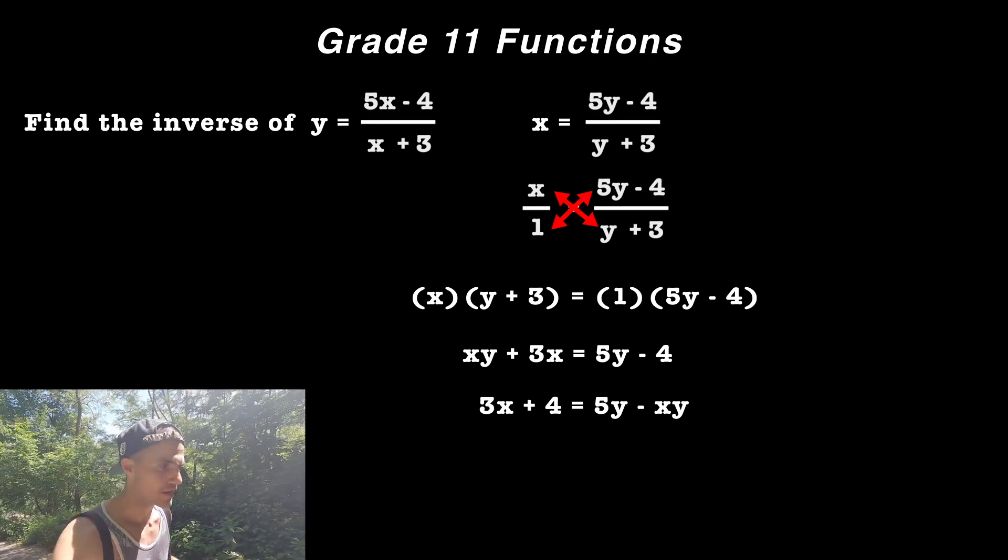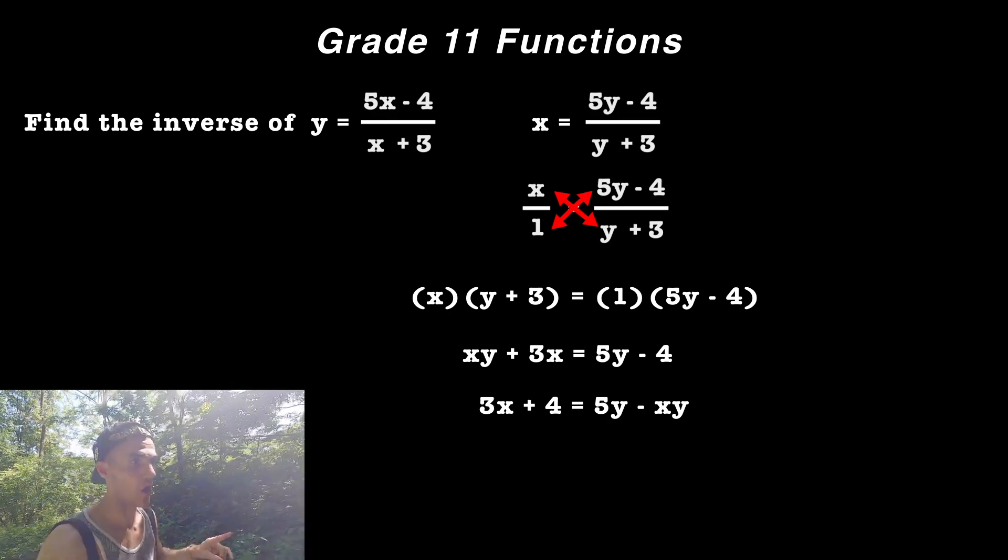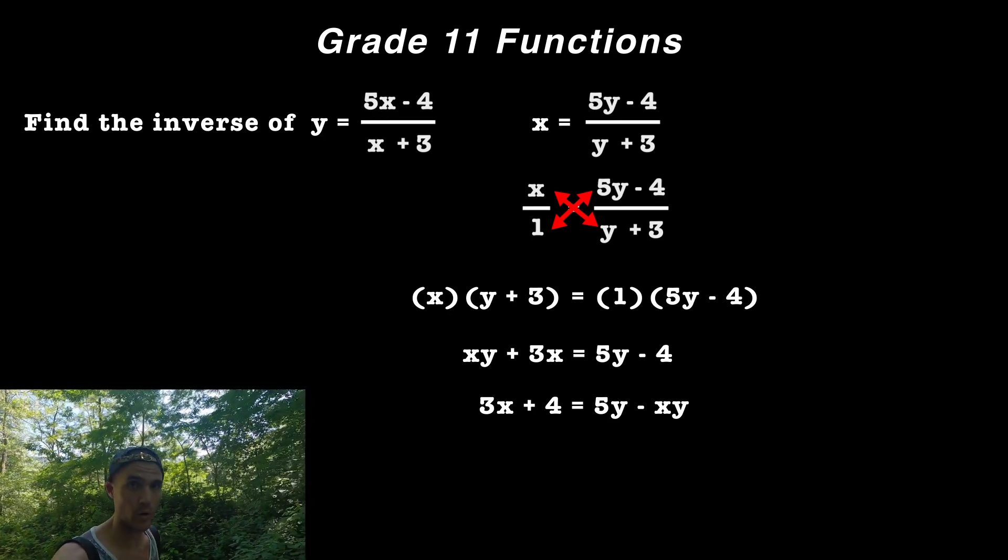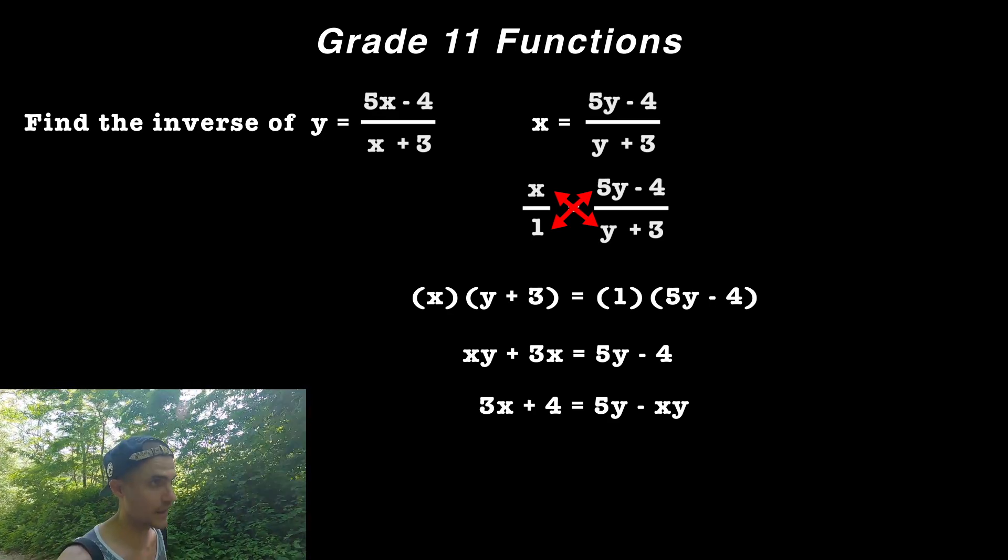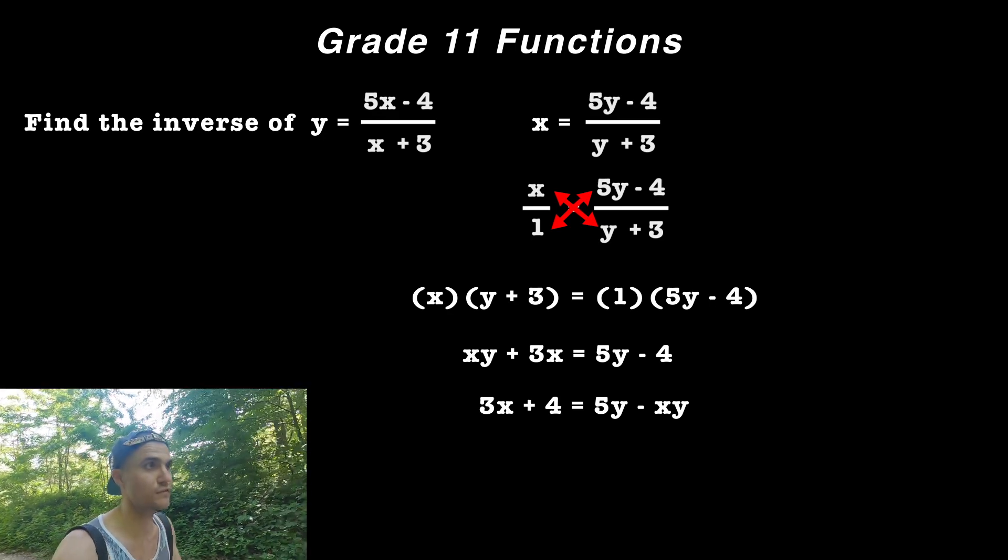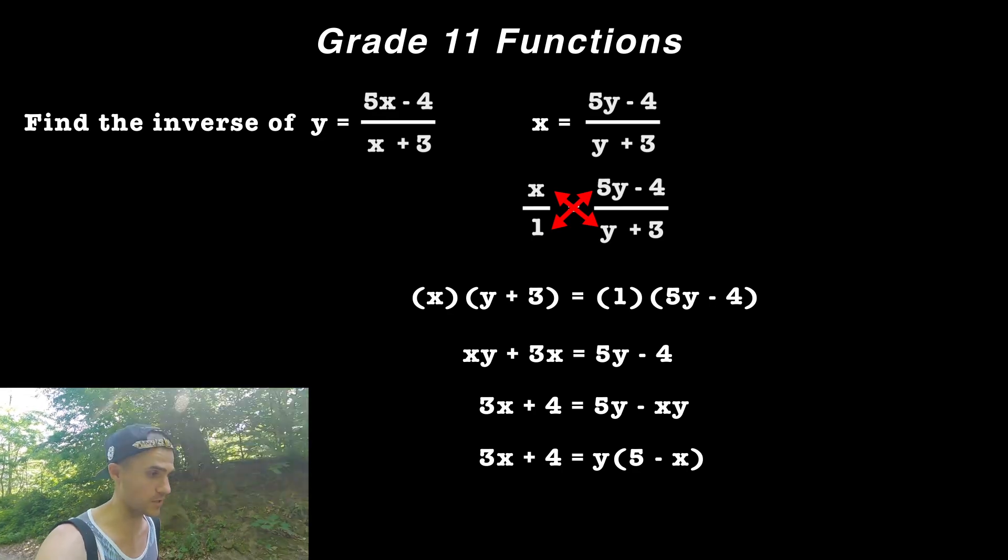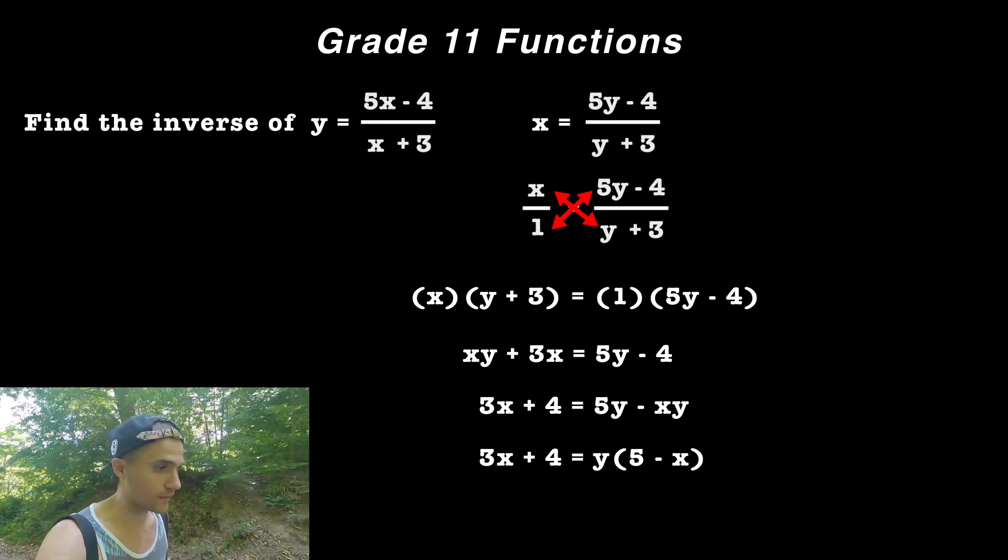And so at this point what we would end up with is 3x plus 4 on the left side and then 5y minus xy on the right side. And then on the right side what we could do is we could factor out that y value, because notice that it's a common variable in both expressions. We factor out the y value.